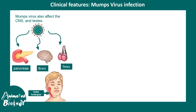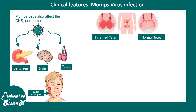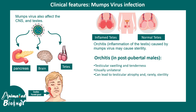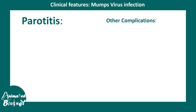Besides the parotid gland, some lymph nodes can also become swollen when the virus infects them. The pancreas, brain, and testes are other sites of infection. The testes can get inflamed — this is known as orchitis — which happens mostly in post-pubertal males. Testicular swelling is usually unilateral, and sometimes it might lead to atrophy and rarely to sterility.